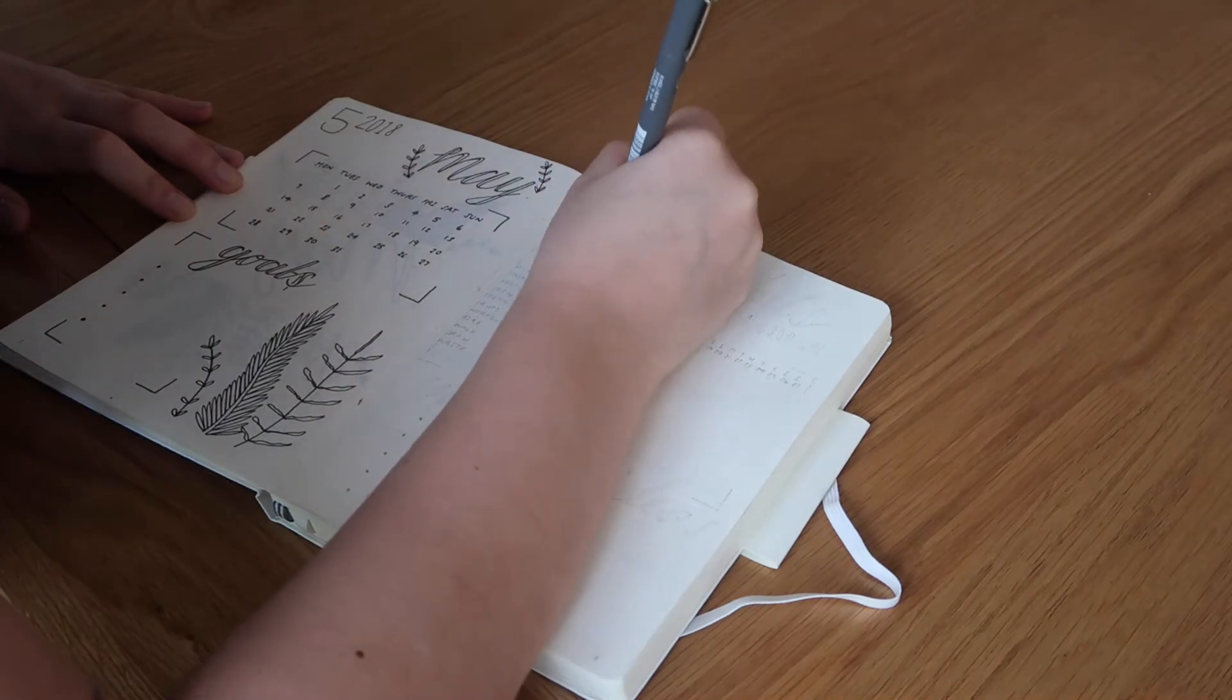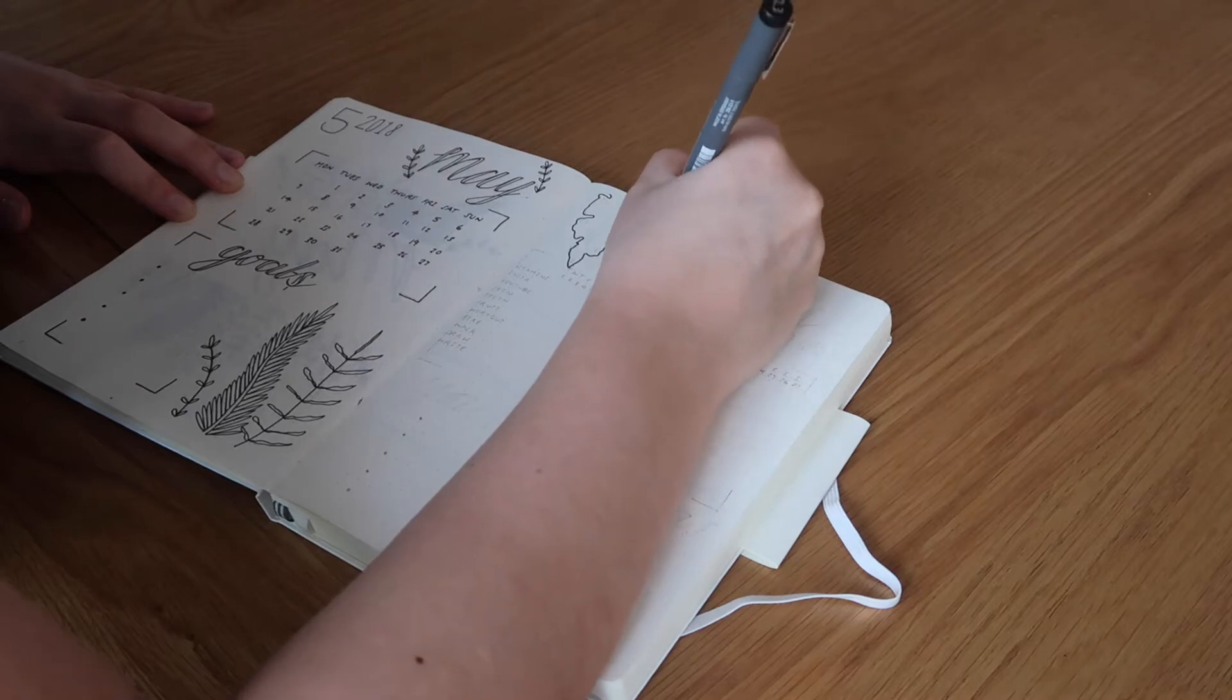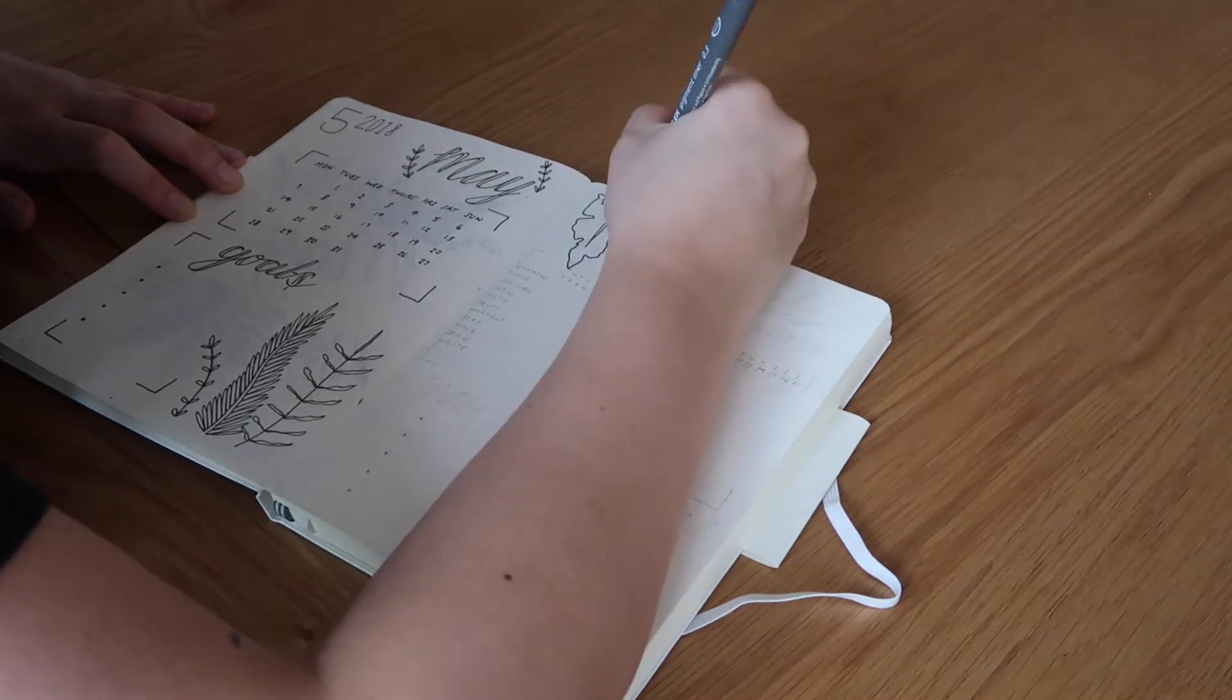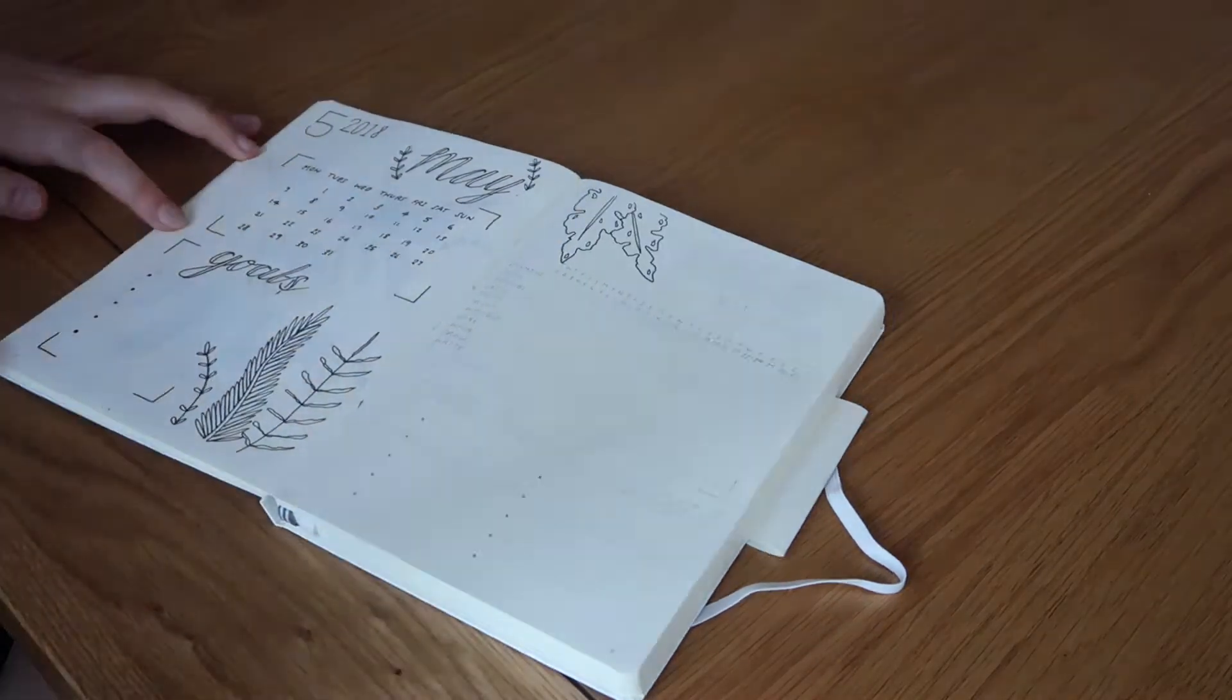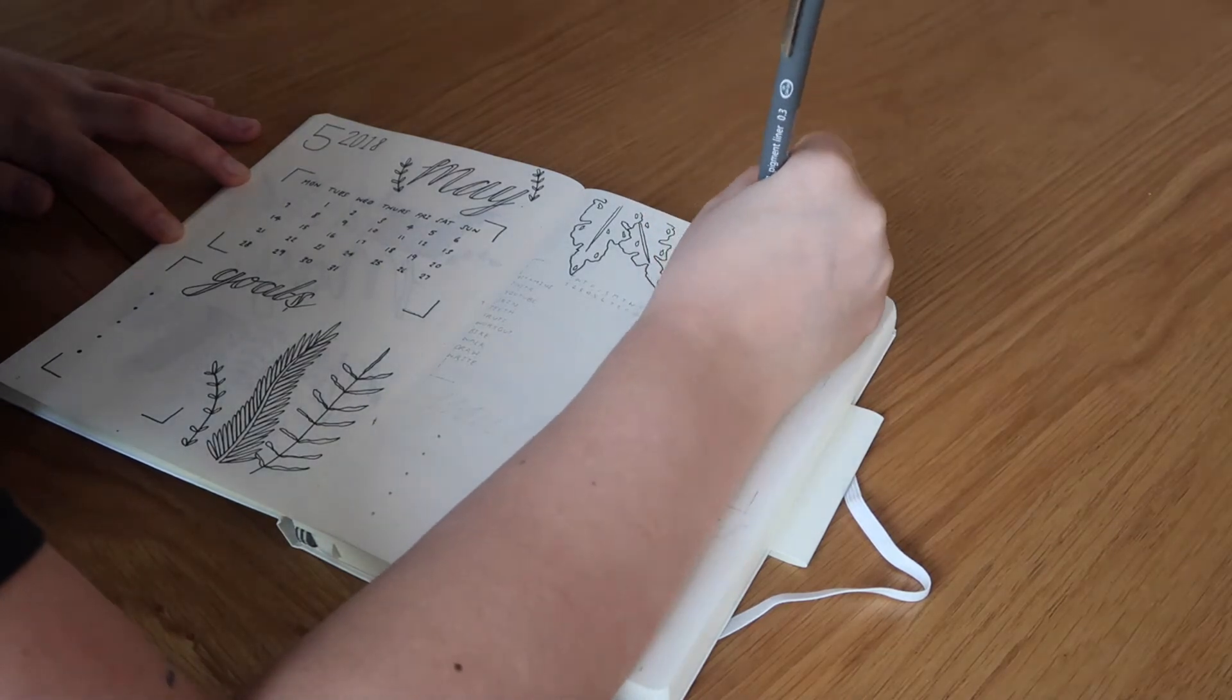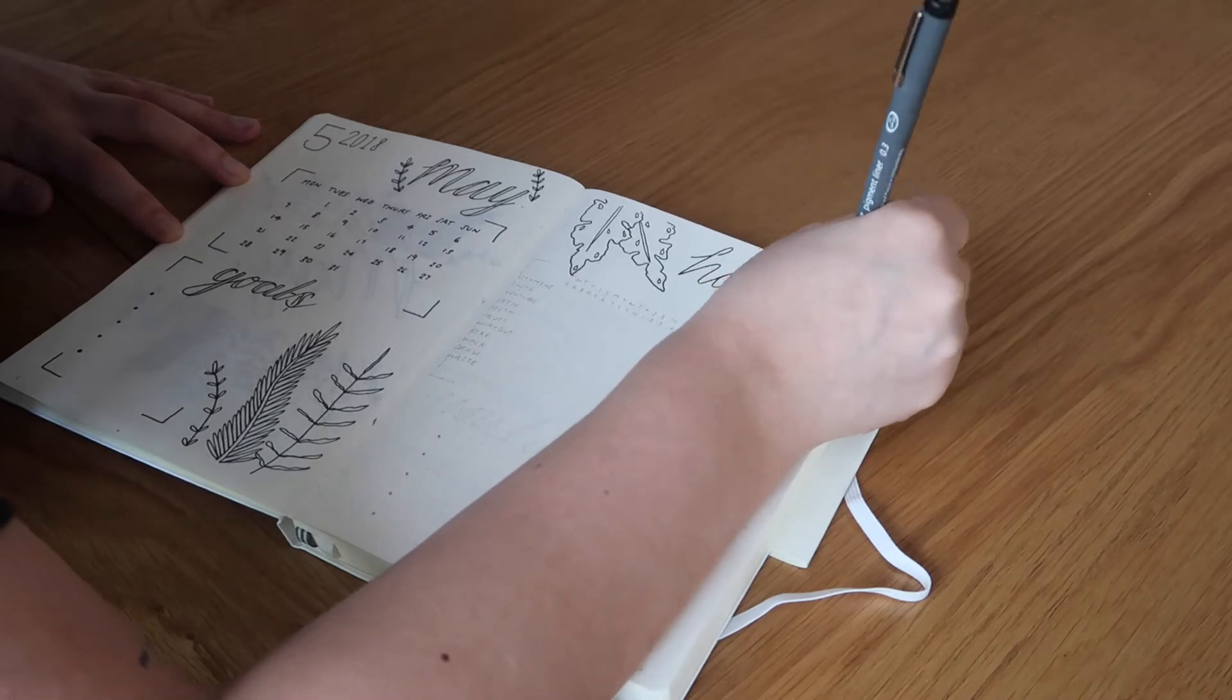On this next page I did a habits tracker at the top. I started off doing these little banana leaves in the corner and obviously did the title. So basically for the habits tracker you write down all of the habits that you want to make sure you are doing that month.